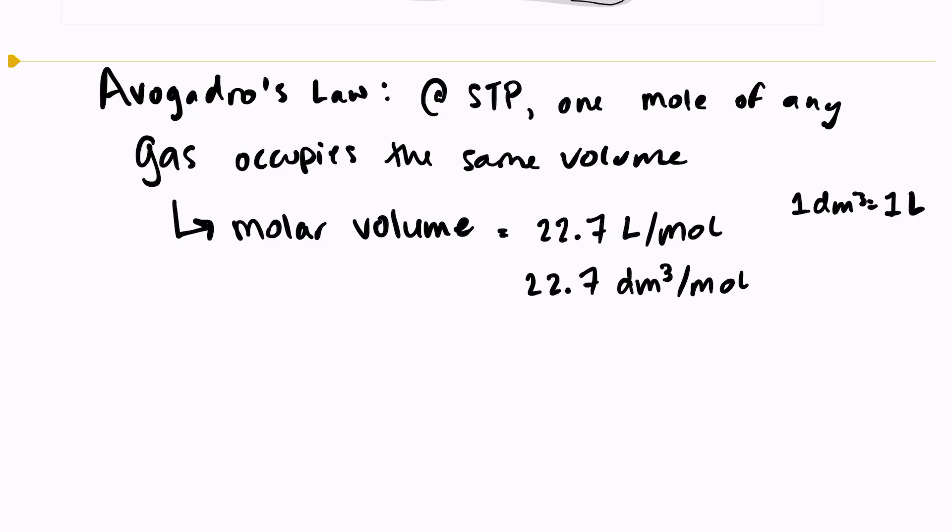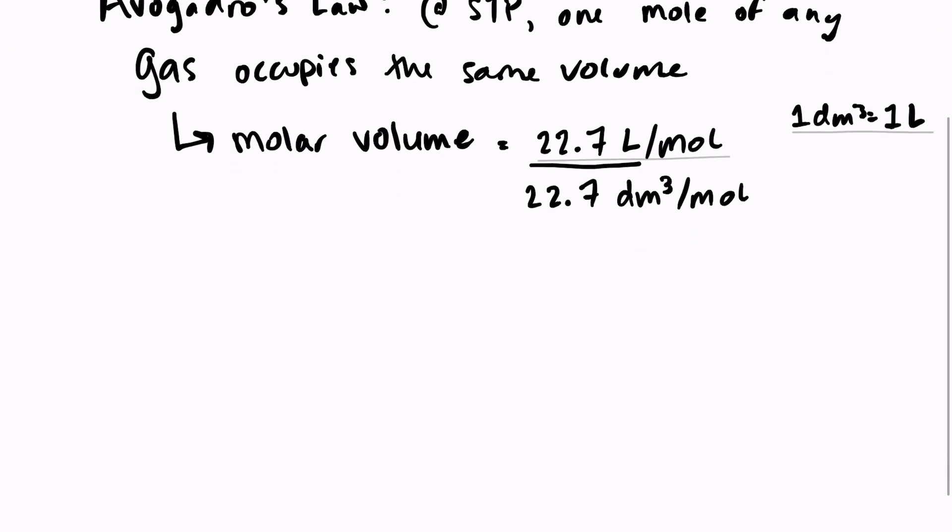So any gas at standard temperature and pressure occupies 22.7 liters for one mole of that gas. Let's just refresh. Standard temperature is 273 Kelvin, which is 0 degrees Celsius. And standard pressure is 100 kilopascals, or 1 times 10 to the 5th Pascals.